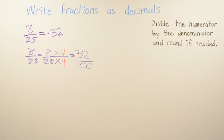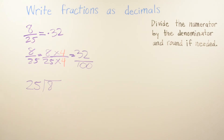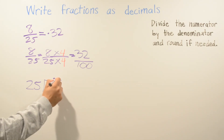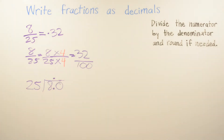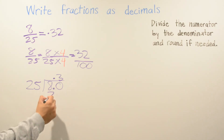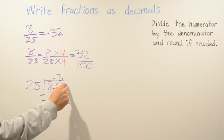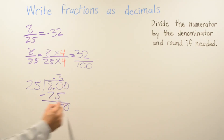Now we'll do the division method for eight over twenty-five: divide the numerator by the denominator and round if needed. We set up eight divided by twenty-five. Twenty-five does not go into eight, so we extend the division by adding a decimal and a zero. Twenty-five goes into eighty three times — twenty-five times three is seventy-five, leaving a remainder of five.